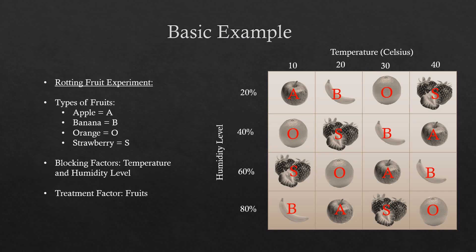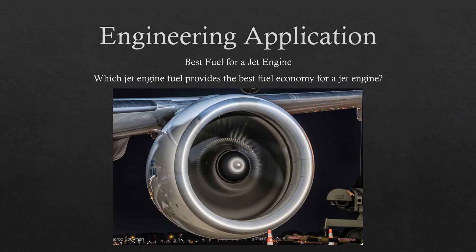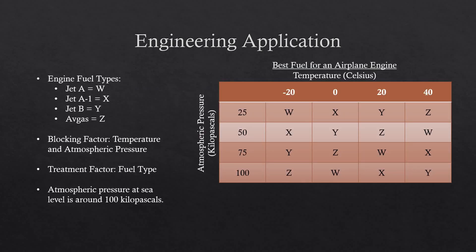As clearly shown, this example follows the basic rule of a Latin square design. If we now consider an engineering application, one example is if an aerospace engineer wanted to test which jet engine fuel provides the best fuel economy for a jet engine. If we consider four types of common airplane fuel — Jet A, Jet A1, Jet B, and Avgas — these will be our treatment factors. Our blocking factors will be atmospheric pressure and temperature. Just as before, we can use a Latin square design to test different combinations for the four different fuels. By using the blocking factors, we can see how each fuel performs under a certain condition.